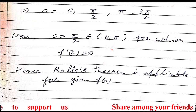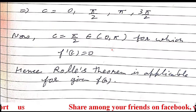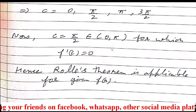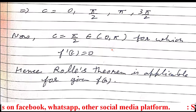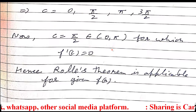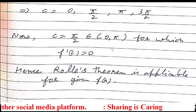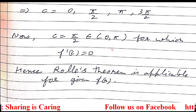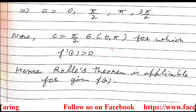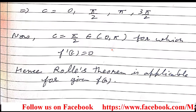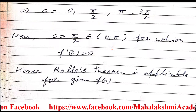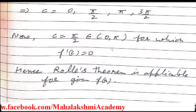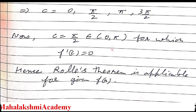I hope these questions are clear to you. We used the concept of Rolle's theorem, which has 3 conditions: the function should be continuous in the closed interval, differentiable in the open interval, and the function's value at the lower limit must equal its value at the upper limit. If any function satisfies these 3 conditions, then there exists a point c in the open interval where f'(c) = 0. If you have any suggestions or problems, please write in the comments so we can improve and clear your doubts. Thank you.